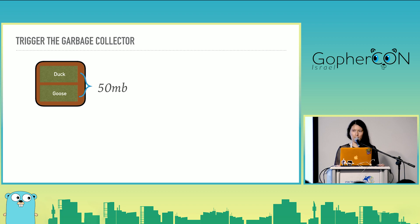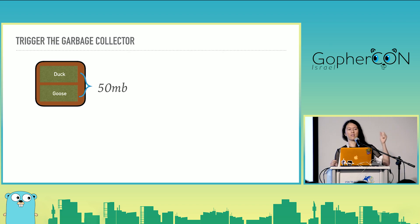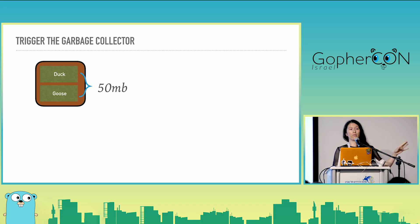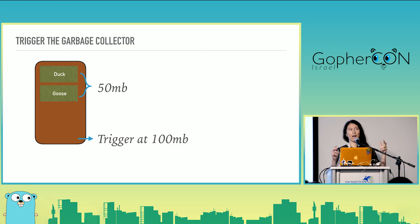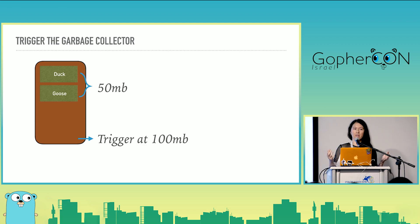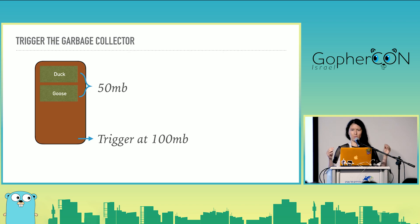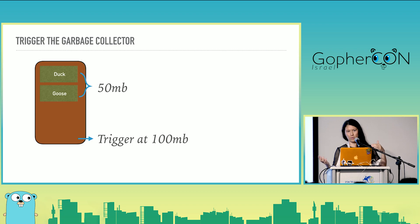Now we get into the triggering of the garbage collector. At the end of the last garbage collection run, say we have 50 megabytes of live objects — things we still have references to on our stacks. We're going to effectively double that before triggering again, so 100 megabytes. After the next run, maybe our live set shrinks back to 50 megabytes, so the next trigger will again be at 100. This way we try to maintain our heap size while accounting for changes. If you have a traffic spike, your live heap might hit 100 megabytes and we'd trigger at 200, then shrink back. This is the default behavior.